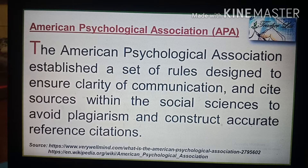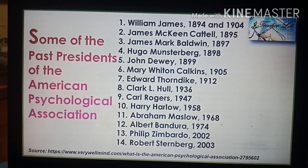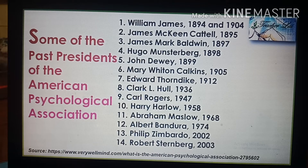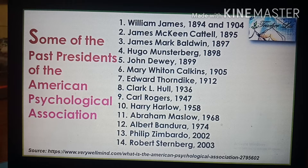The publication manual includes details on how to organize professional journal articles, how to cite sources, and how to list references. Here are some of the past presidents of the American Psychological Association: William James 1894 and 1904, James McKeen Cattell 1895, James Mark Baldwin 1897, Hugo Münsterberg 1898, John Dewey 1899, Mary Whiton Calkins 1905.